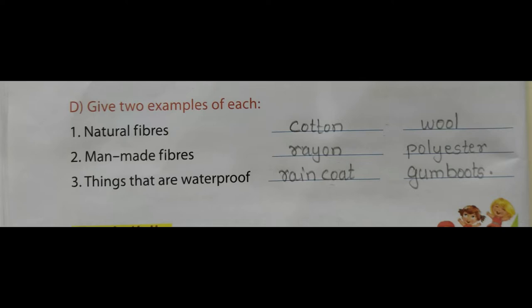Our next group of questions is: Give two examples of each. First question: Natural fibres. Second: Man-made fibres. Third: Things that are waterproof. Two examples of natural fibres are cotton and wool. Examples of man-made fibres are rayon and polyester.